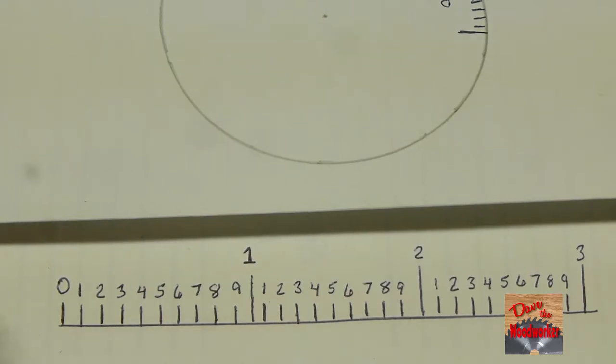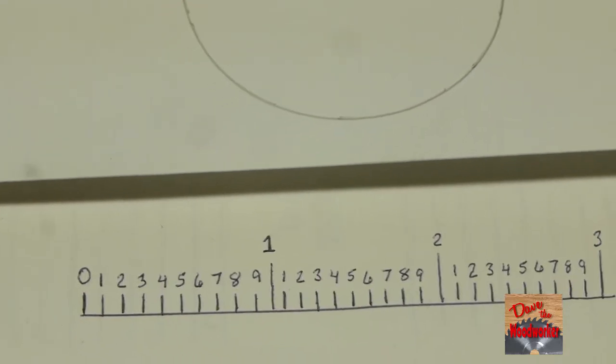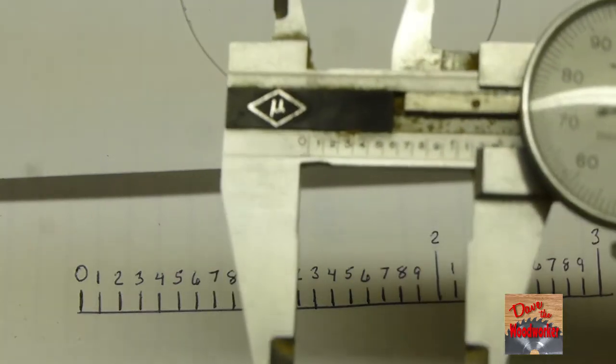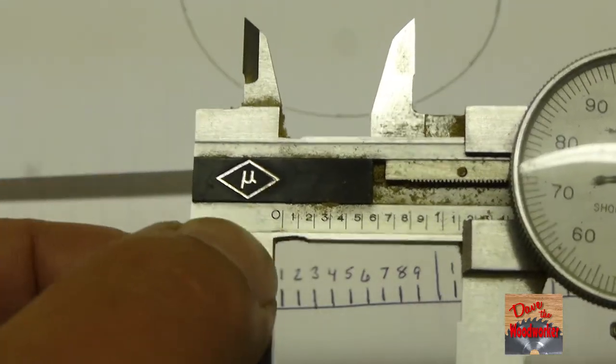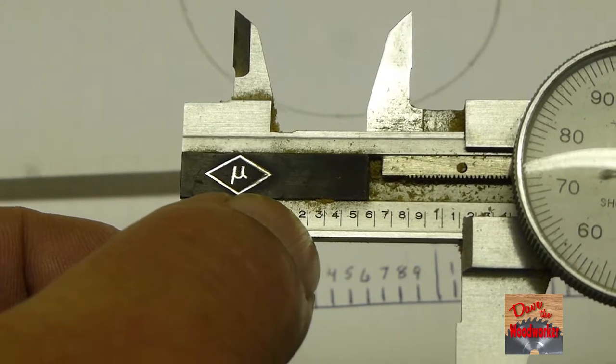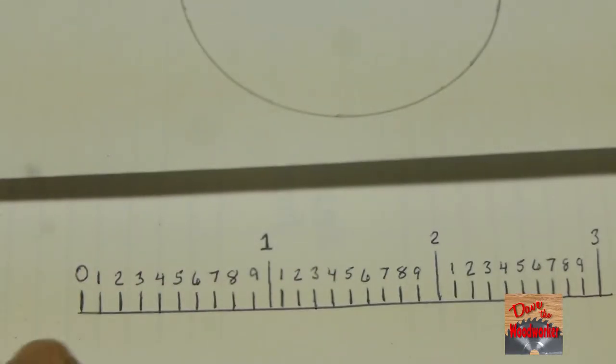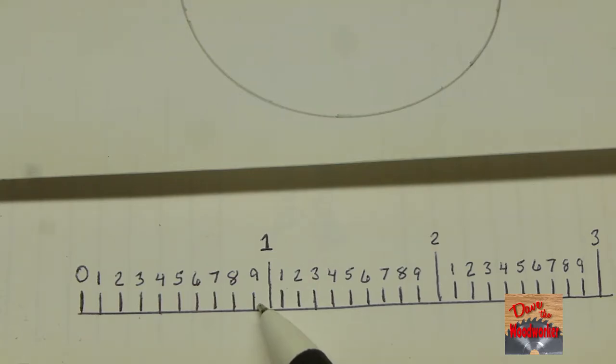So this little chart might help you a little bit better reading this. You can see it a little bit better. Every little mark that's on the scale here is one hundred thousandths, two hundred thousandths, three hundred thousandths, four hundred thousandths, five hundred thousandths. So you got here one hundred, two hundred, three hundred, four hundred. When you get to ten of them, that makes one inch.